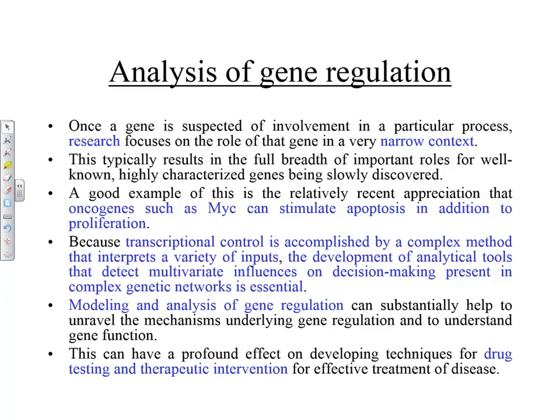Because transcriptional control is accomplished by a complex method that interprets a variety of inputs — remember all the transcription factors getting onto the RNA polymerase — all of them have a contribution. If all those transcription factors are not expressed at the right time and at the right location, you're not going to have transcription. Therefore, the development of analytical tools able to detect multivariate influences on decision-making present in complex genetic networks is essential — it's not enough to just have univariate tools.